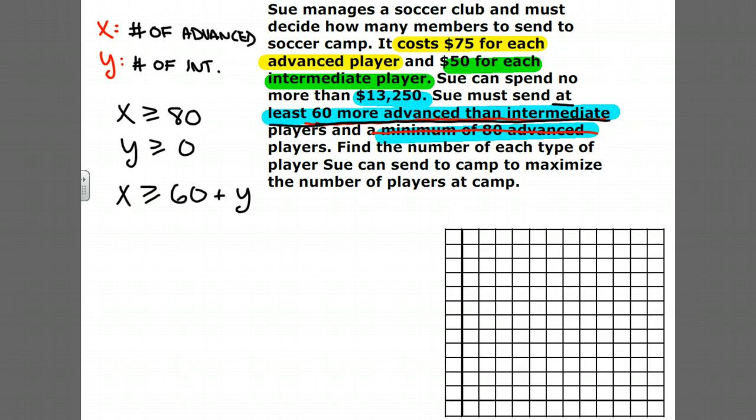That takes care of this 60 more advanced than intermediate. For the sake of graphing, I'm going to rearrange this inequality because I like them in vertex form. I'm going to rewrite this as X minus Y is greater than or equal to 60.